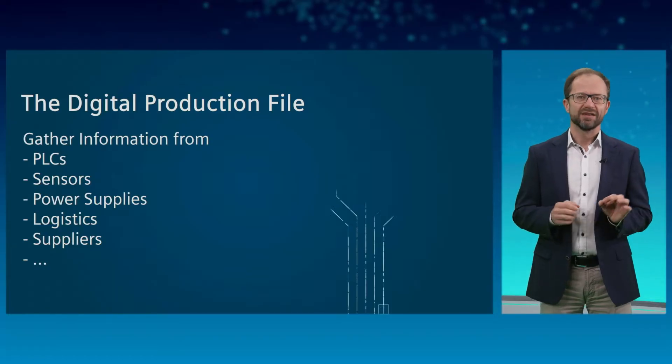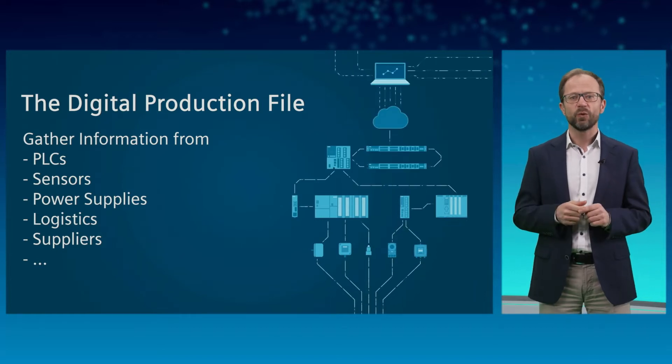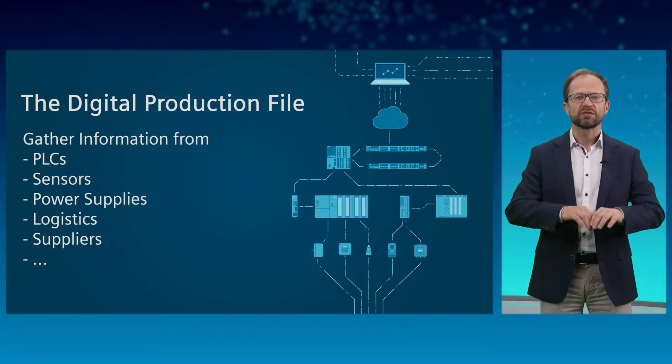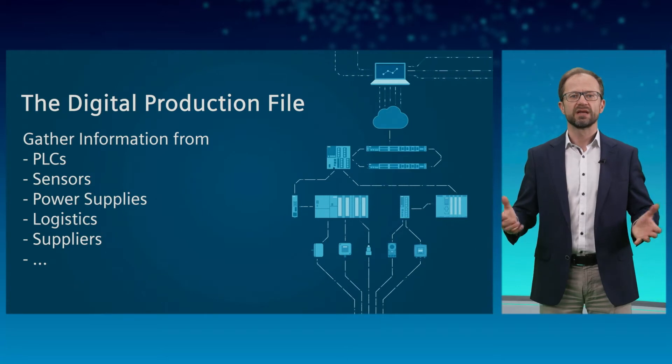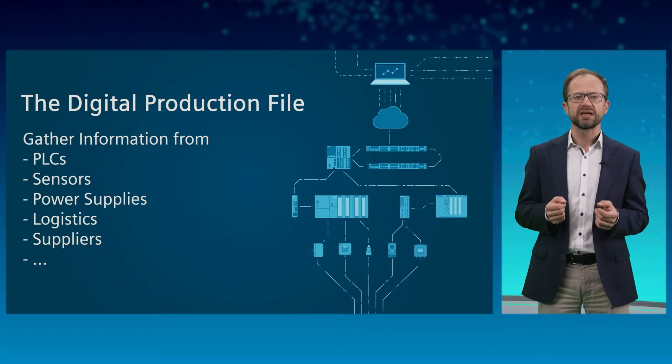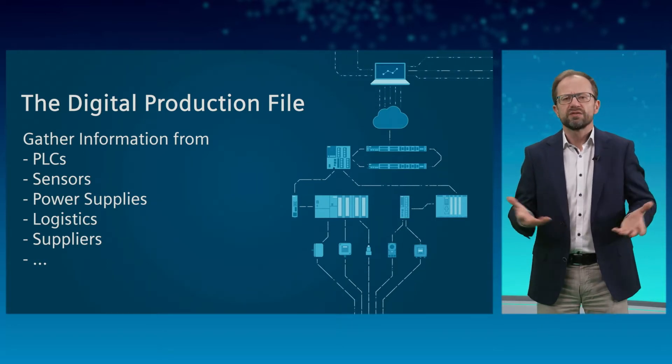The digital production file is your solution for this, and it is available at the touch of a button. The basis for the digital production file and the use of all its advantages is as much data and information as possible from a variety of sources. This data may come from PLC controllers, sensors in the factory, logistics activities, or even from suppliers. The use of this data is almost limitless and depends only on your needs and objectives.